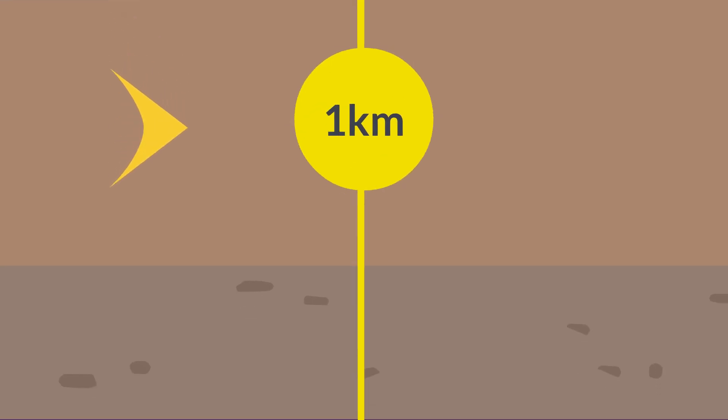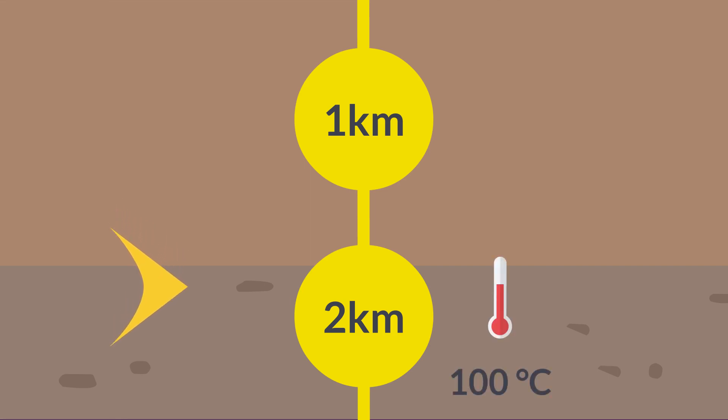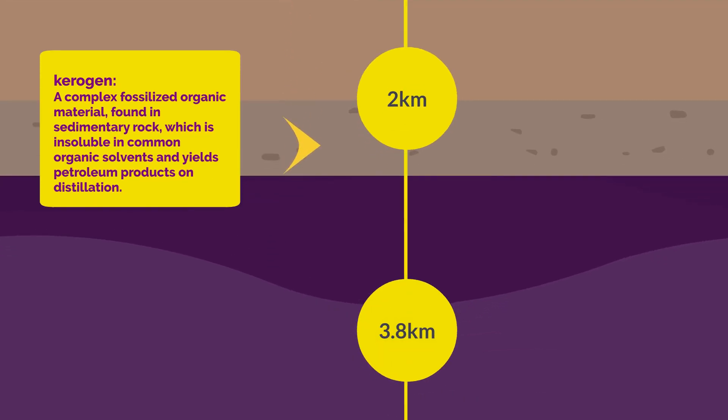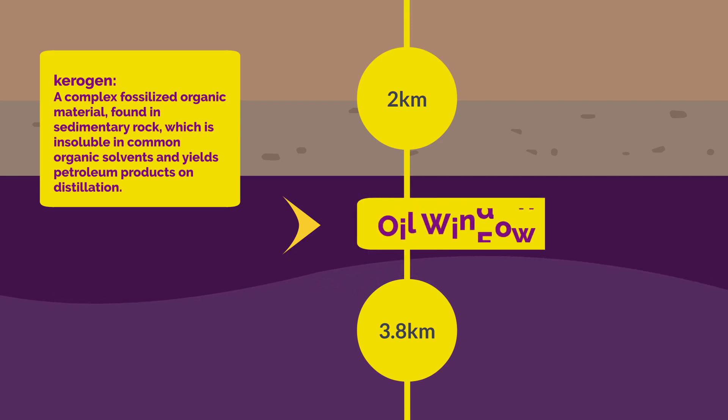At 1,000 meters underground, the temperature is 50 degrees Celsius and the pressure is 250 bar. At a depth of 2,000 meters when the temperature reaches 100 degrees Celsius, kerogen starts to release hydrocarbons. Between 2,000 and 3,800 meters, it turns into oil. This depth interval is known as the oil window.